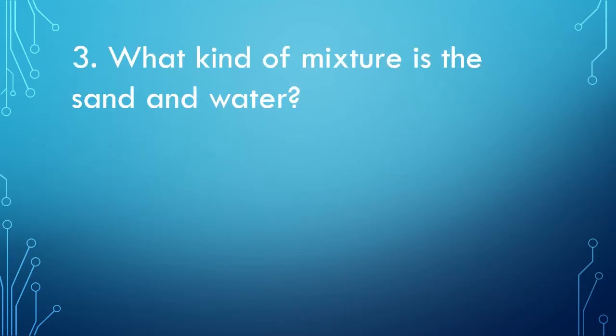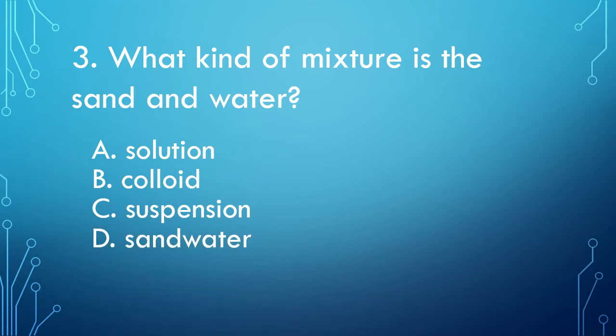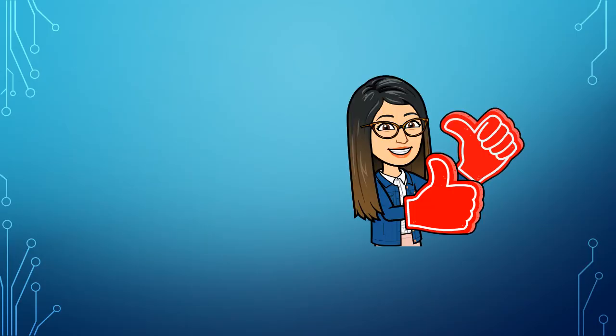Number 3. What kind of mixture is the sand and water? A. Solution B. Colloid C. Suspension And D. Sand water. The answer is letter C, Suspension.